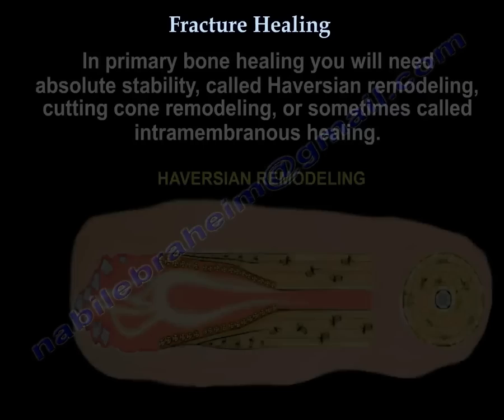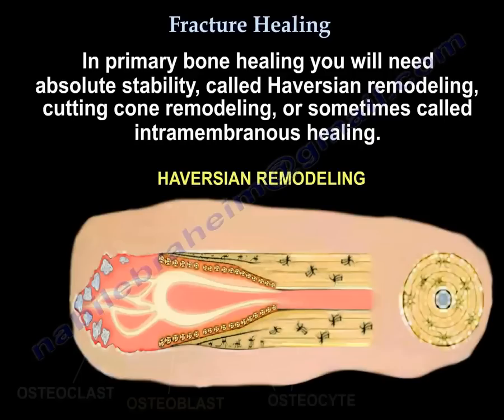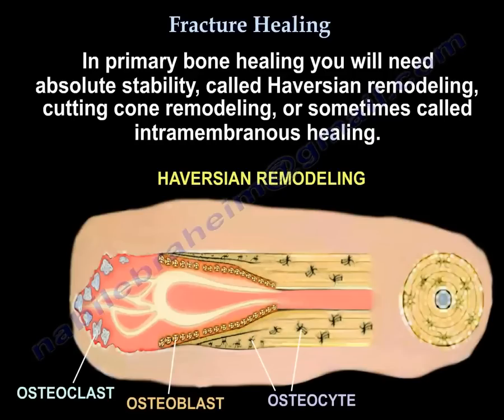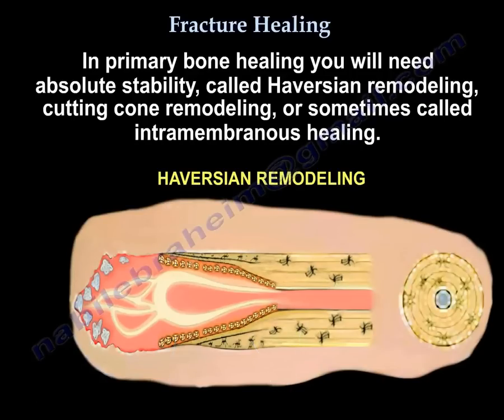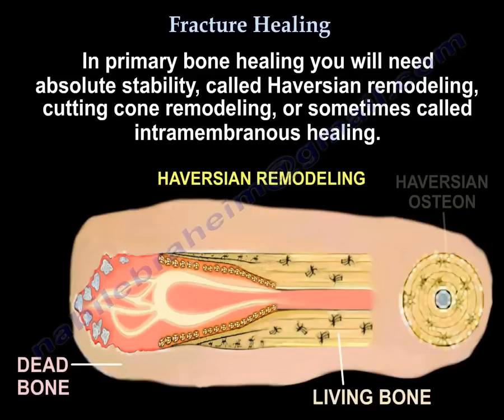In primary bone healing, you will need absolute stability. It is called Haversian remodeling or cutting cone remodeling. Sometimes it is called intramembranous healing.